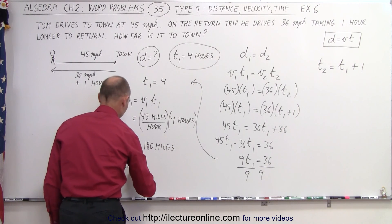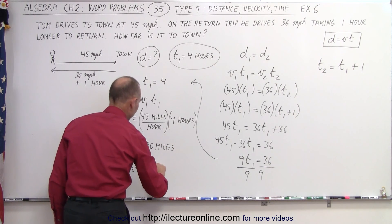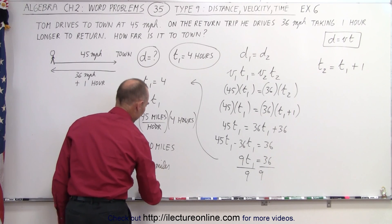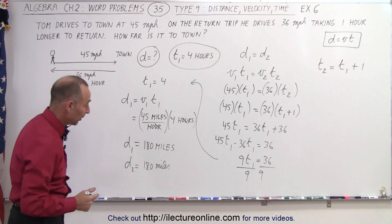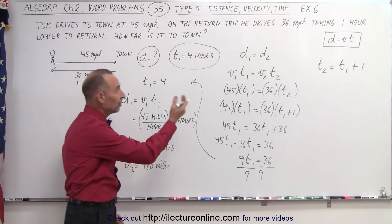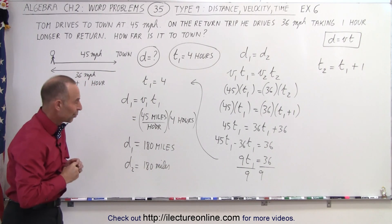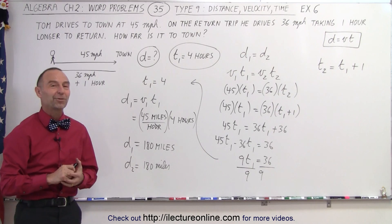And of course, therefore distance two, the return trip, is also 180 miles. And then if we divide that by 36 miles per hour, we get 5 hours, which is indeed what we would expect. And so it looks like we did it correctly. That's how it's done.